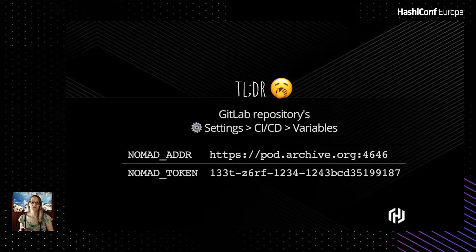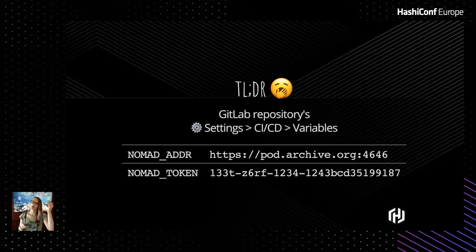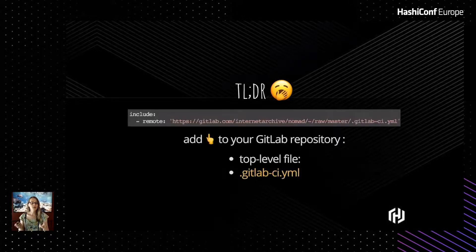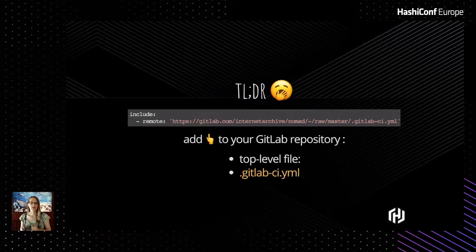Here's the TL;DR. All you need is two settings — two CI/CD variables. You just put that in your GitLab repository; I like to put it in the group one level higher so it applies to all your projects. You add your Nomad address and Nomad token for whatever your cluster is (that's a fake token). And then you do a two-line YAML file include — that's all you need. You put this file as a .gitlab-ci.yml at the top of each repo and you never have to change it because everything's getting included.